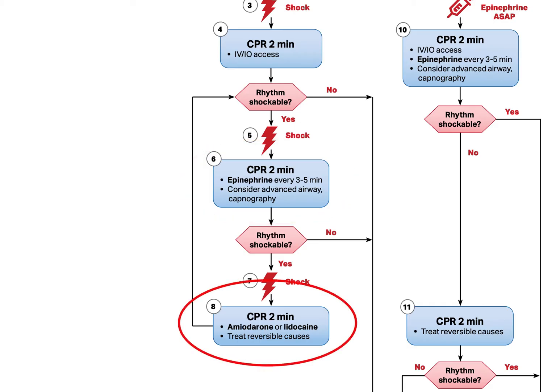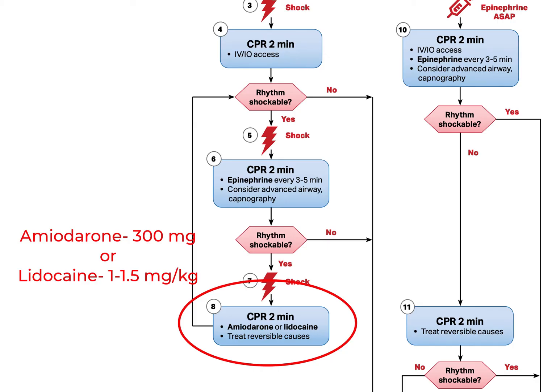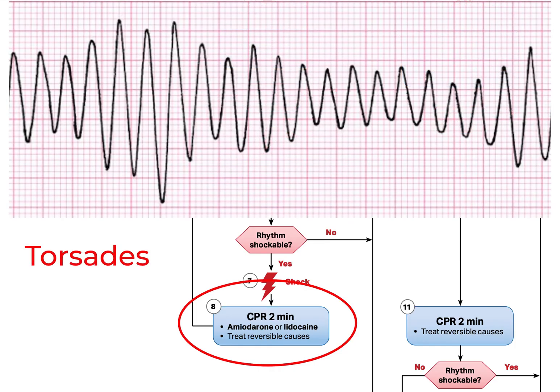The second drug we administer for shockable rhythms is either amiodarone or lidocaine, and we give one of those antidysrhythmic drugs in the next cycle following our first epi administration. The initial dose of amiodarone is 300 mg, and the initial dose of lidocaine is 1 to 1.5 mg per kg, or approximately 100 mg for an average adult. One important note: if your patient is in Torsade de Pointes, a specific form of polymorphic VTAC often just called Torsades, neither amiodarone nor lidocaine are likely to be effective, and magnesium sulfate is given instead at a dose of 1 to 2 g.